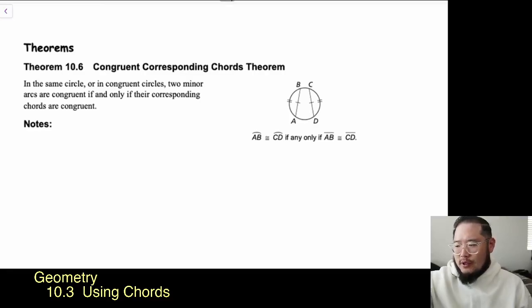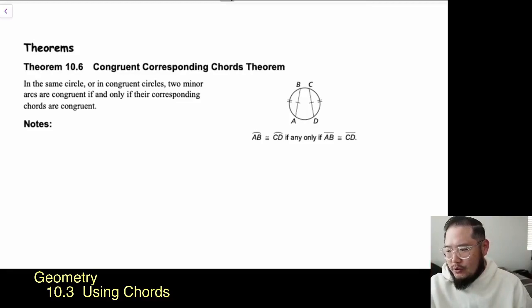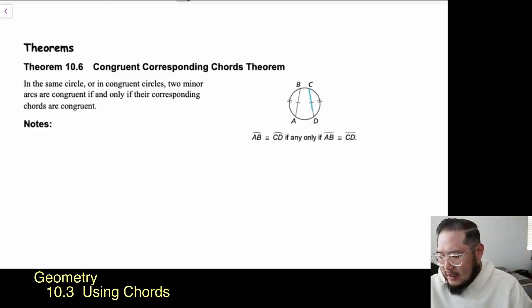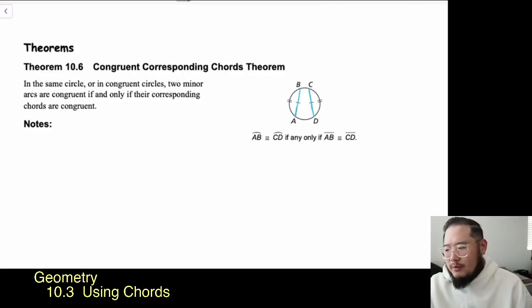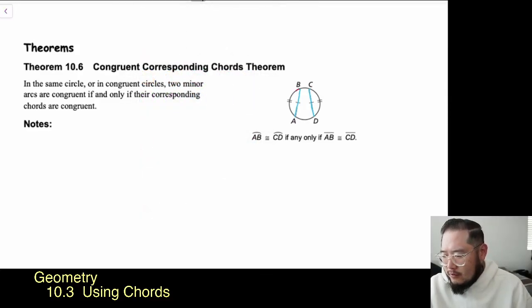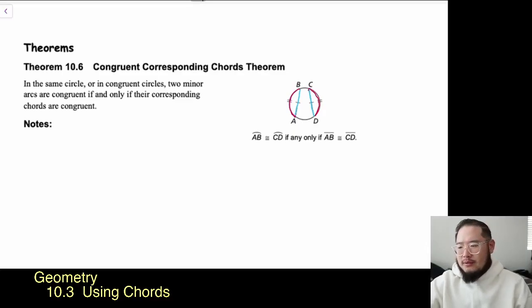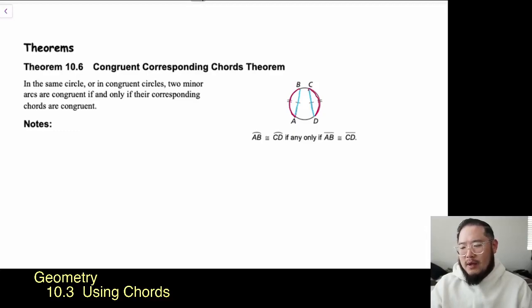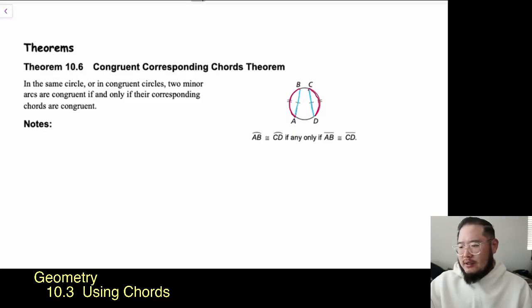The first one is Theorem 10.6, the Congruent Corresponding Chord Theorem. In this circle, we see two chords — I'll highlight in blue — chord CD and chord AB. What we're saying is that because these two chords are congruent, the arc from A to B and the arc from C to D are congruent as well. So in the same circle or in congruent circles, two minor arcs are congruent if and only if their corresponding chords are congruent.